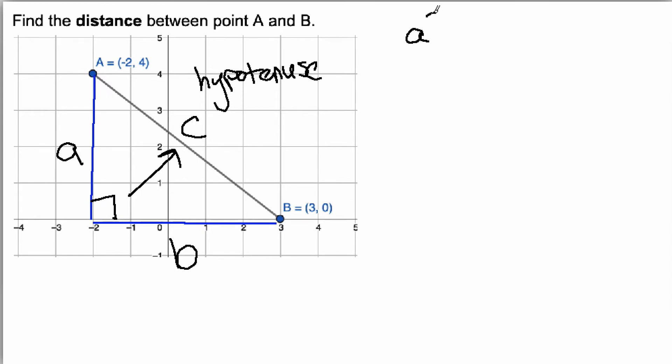With the Pythagorean Theorem, I use this equation: A squared plus B squared equals C squared.